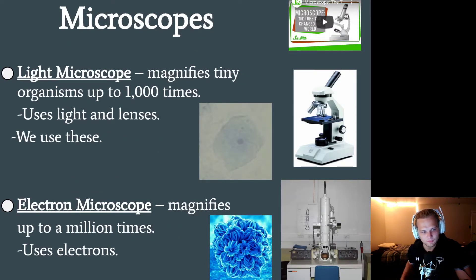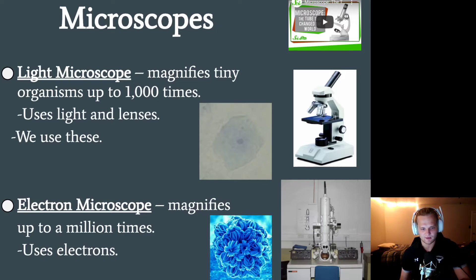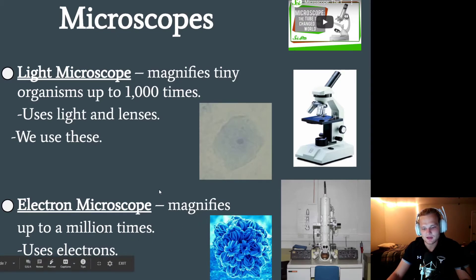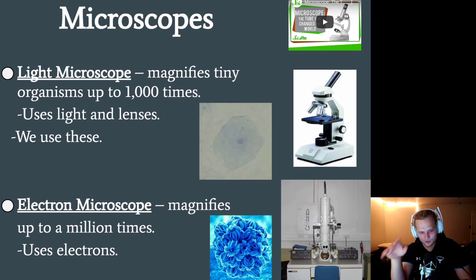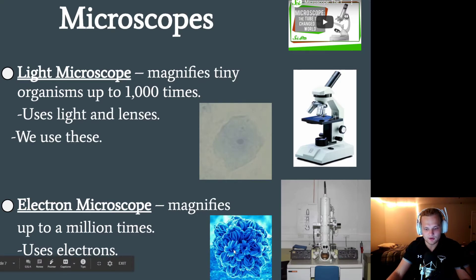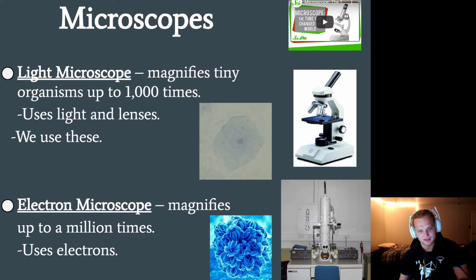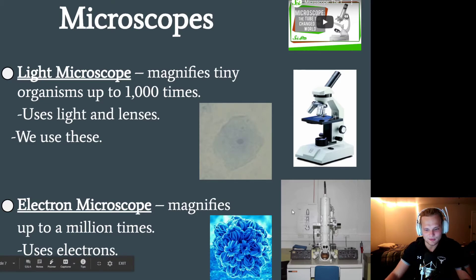We have a couple of different microscopes. The light microscope was a big deal — we could see up to 1,000 times the size. We've used light microscopes in class and we'll be looking at some cells when you guys get back from break. But if you want to talk about hundred-million-dollar microscopes, you can look at the electron microscope, which magnifies things up to a million times. It uses electrons, and we don't need to learn exactly how it works, but it really pushes the scope of what we can actually see — though it does use computer imaging.